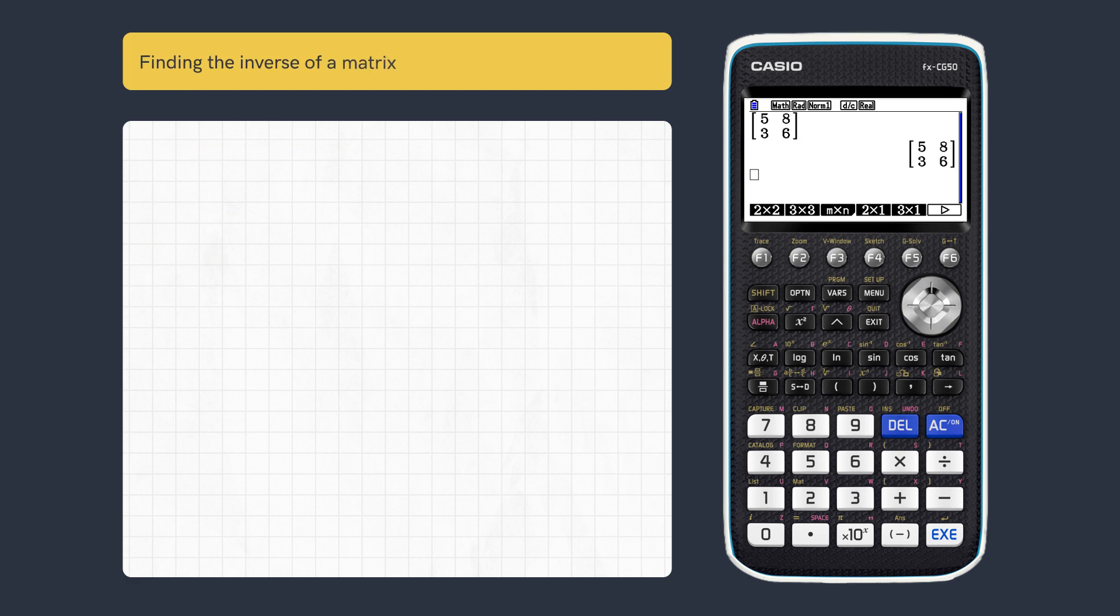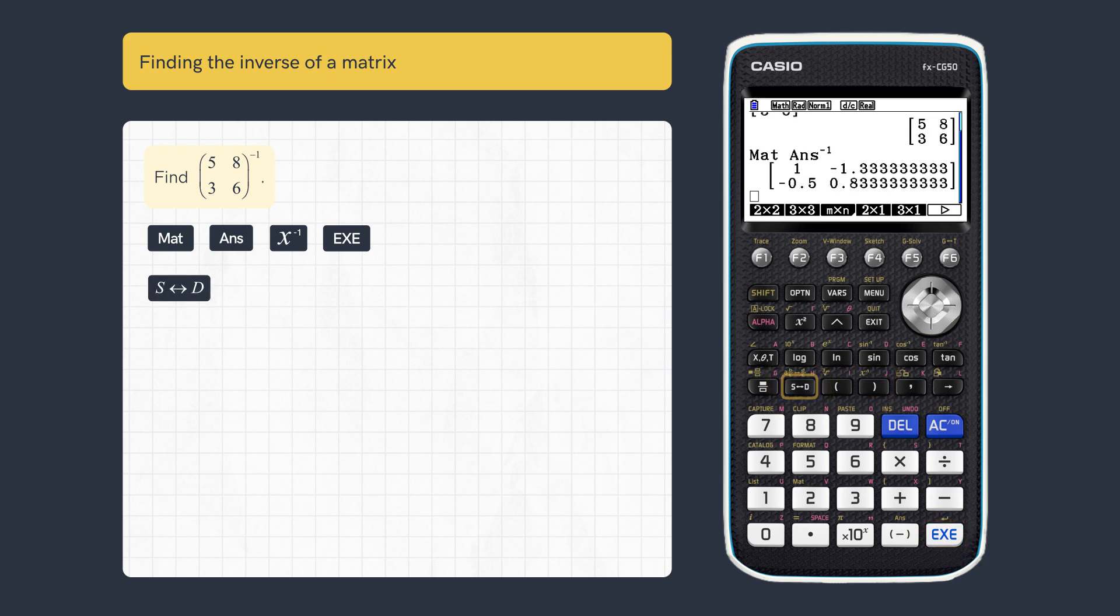We can now easily find the inverse of all square matrices if they exist. To find this inverse, press Matrix and Answer, then the Reciprocal and Execute. Press S to D if decimal elements are required. This method can also be used for saved matrices.